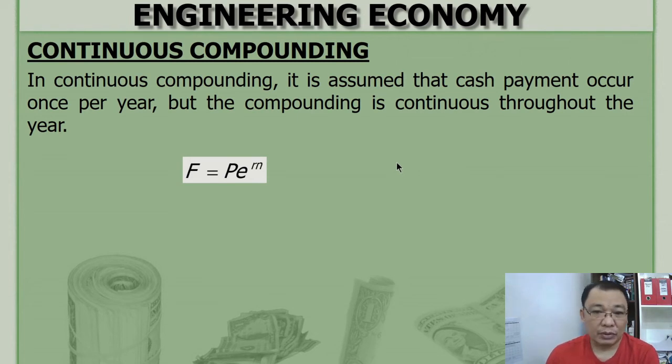And if you want to solve for P, you can just divide by e raised to rn, or simply multiply, but then the exponent is negative like this one.